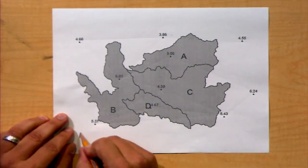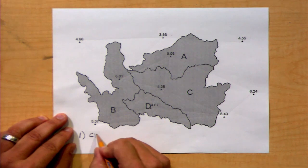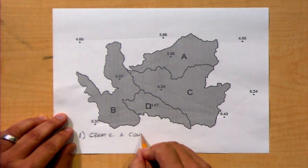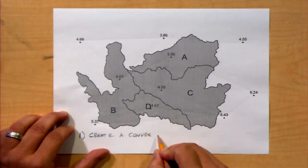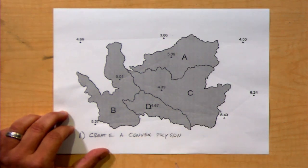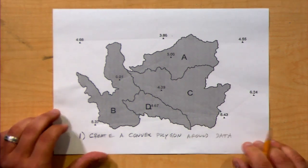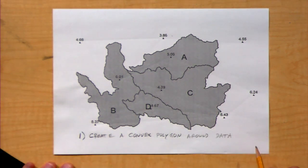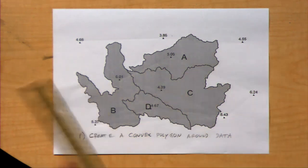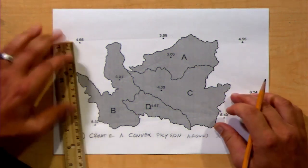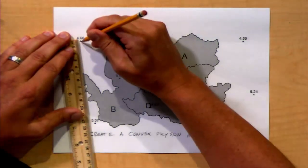We are going to create a convex polygon around the data. If you remember, a convex polygon means that all of the angles around the outside of the polygon or around the inside of the polygon are going to be acute angles or less than 180 degrees. So let's go ahead and create that here.